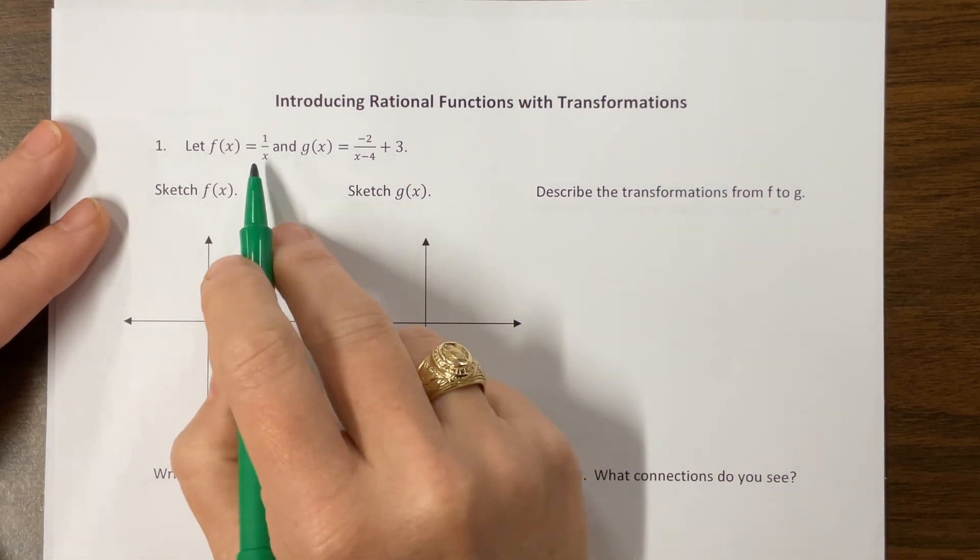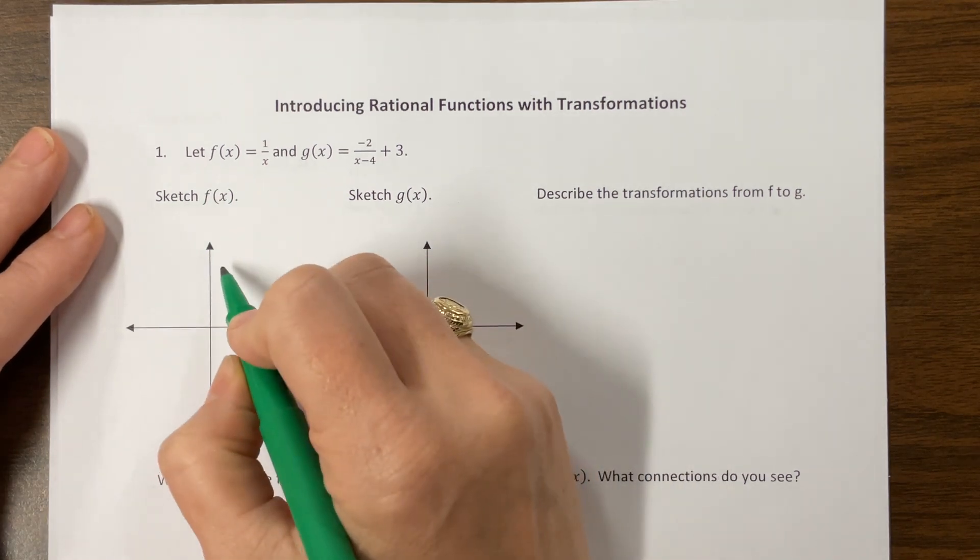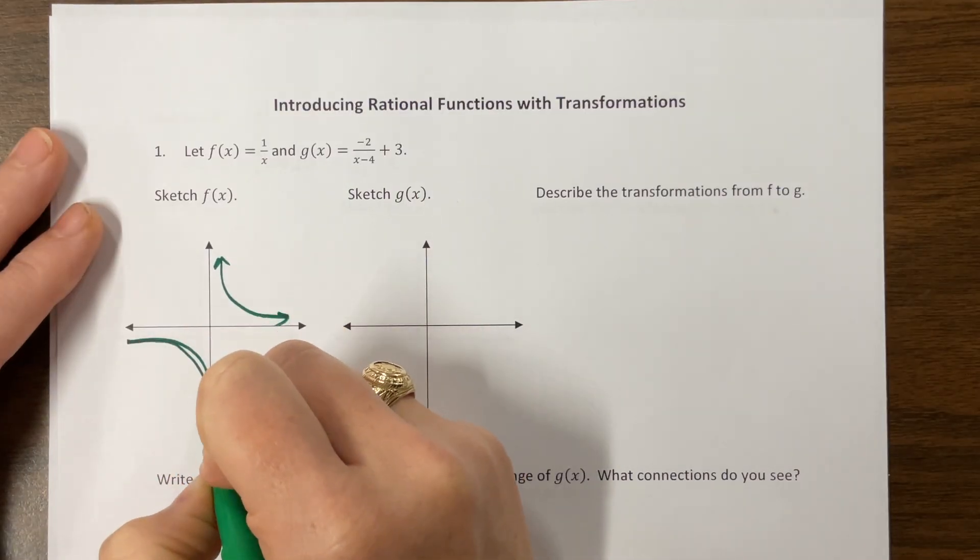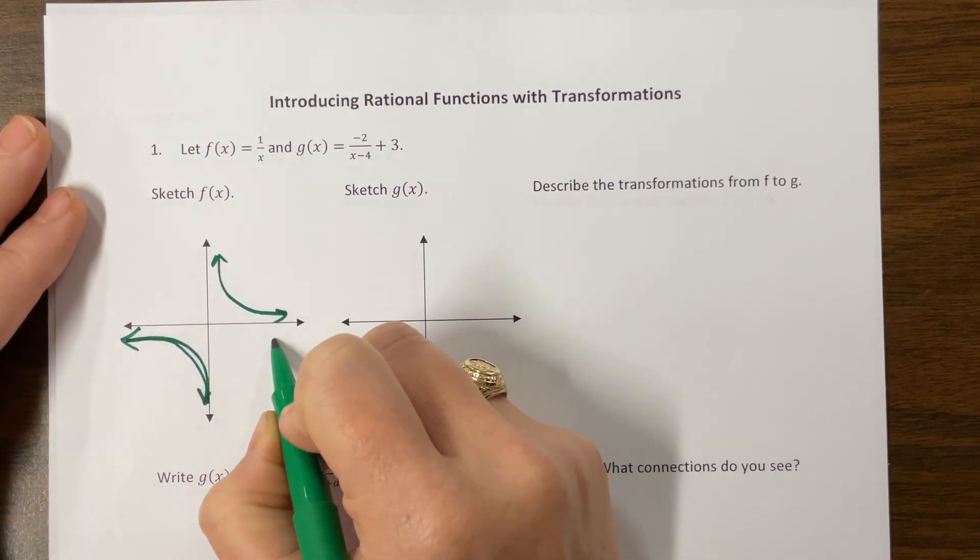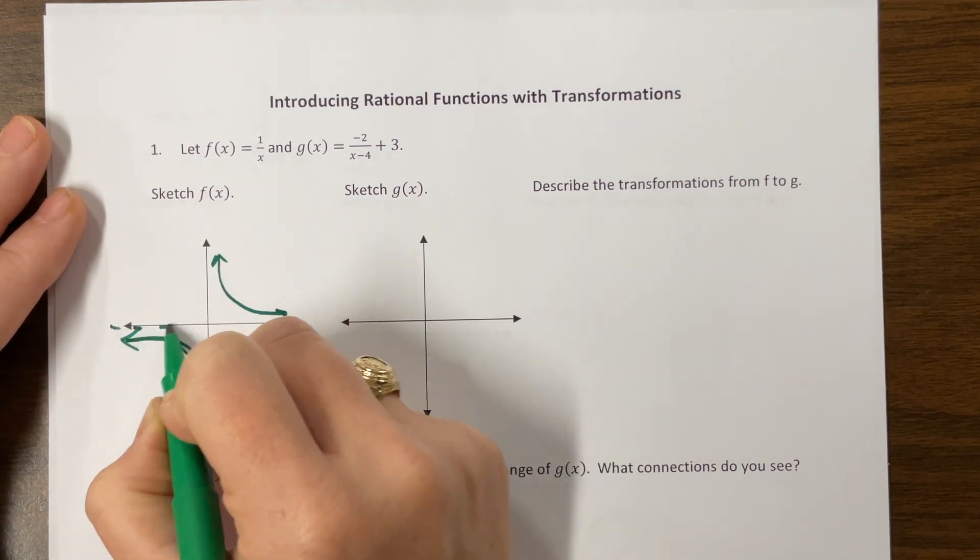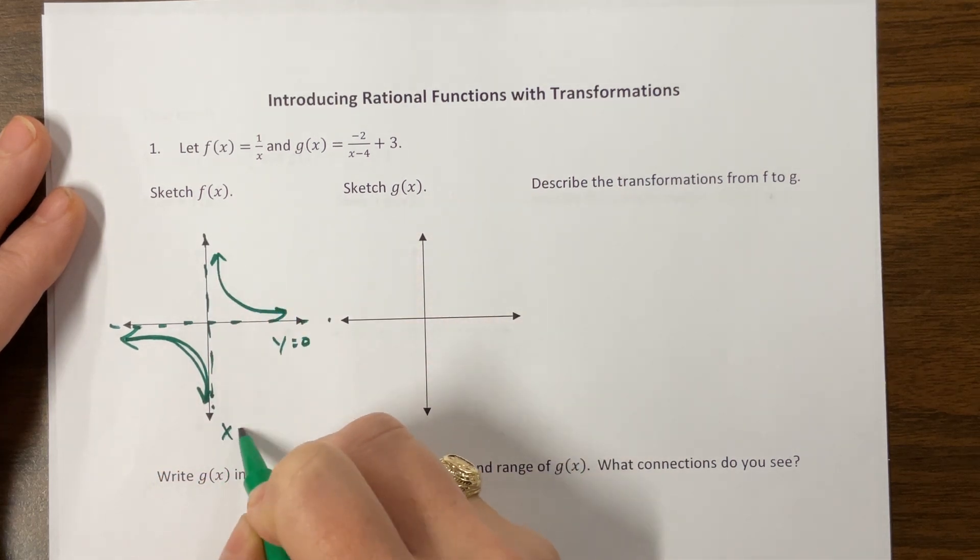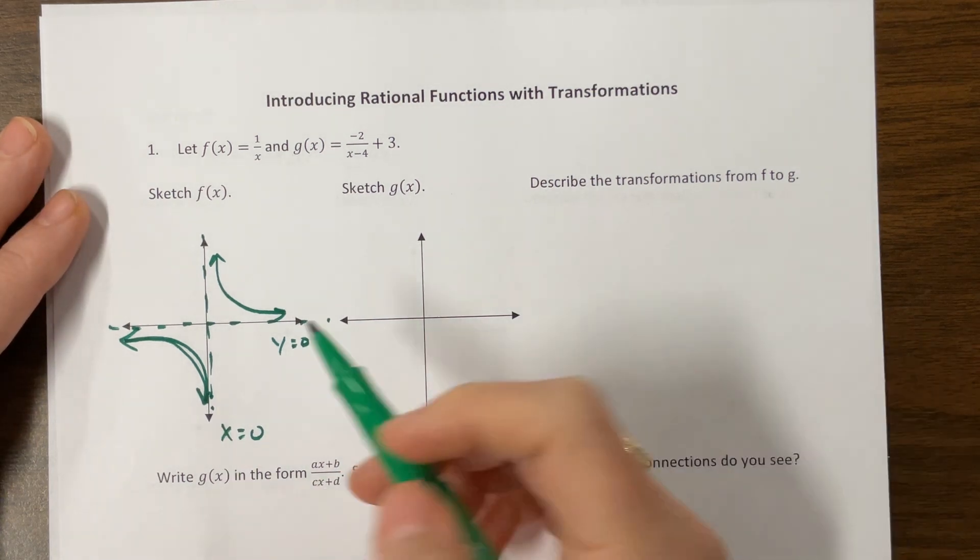To begin with if my function f(x) is equal to 1 over x then it's gonna look something like this. Pretend I can draw. It has an asymptote at y equals 0 so here's that y equals 0 asymptote and it has an asymptote at x equals 0. There we go. Hopefully you already know that.